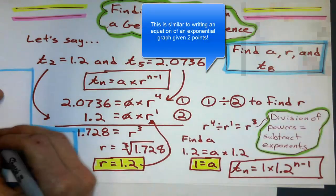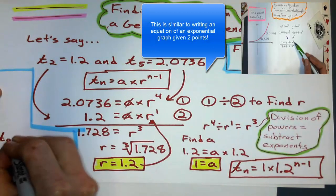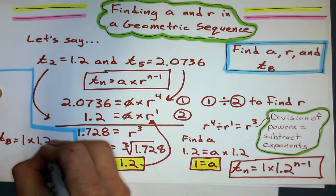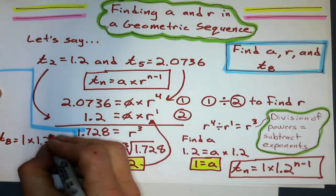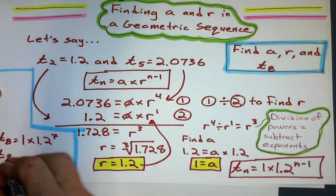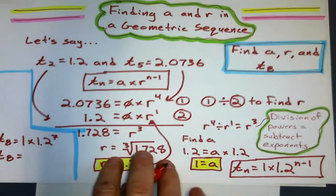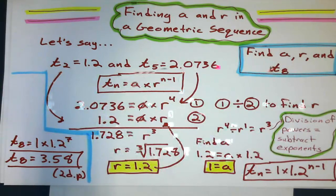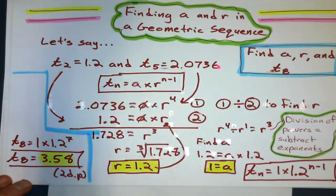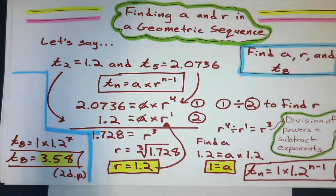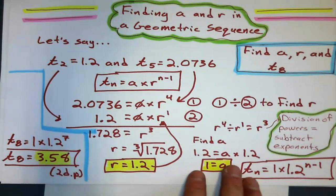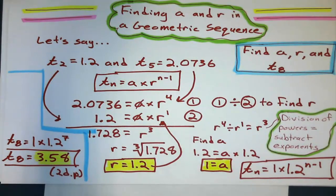I think I have enough to find the eighth term. Because the eighth term is going to be 1, my first term, times my common ratio, 1.2, to the power of n minus 1, which is 7. So my eighth term will give me, I'll have to do some rounding here. What does that give me? Calculator time. Eighth term is going to give me 3.58, common ratio 1.2, first term is going to give me a.